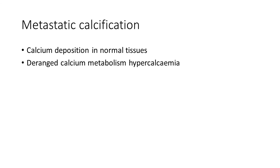In metastatic calcification, calcium deposits in apparently normal tissues, and here the problem is with calcium metabolism and calcium level — there is deranged calcium metabolism and a higher level of calcium in serum, that is hypercalcemia.